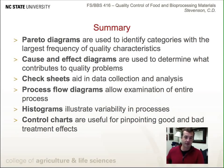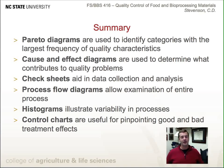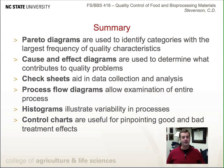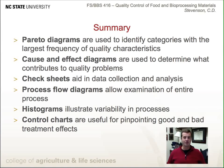This concludes the lesson. In summary: Pareto diagrams identify categories with the largest frequency of quality characteristics; cause and effect diagrams determine what contributes to quality problems; check sheets aid in data collection and analysis; process flow diagrams allow us to examine an entire process; histograms illustrate variability in processes; and control charts are useful in pinpointing good and bad treatment effects.